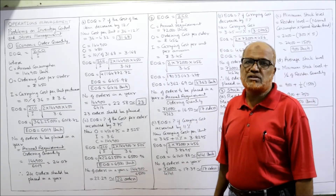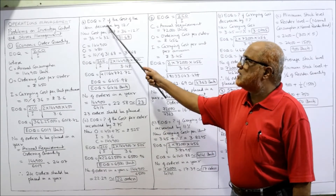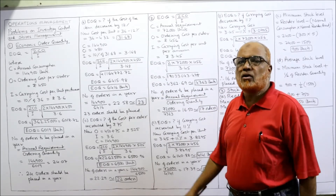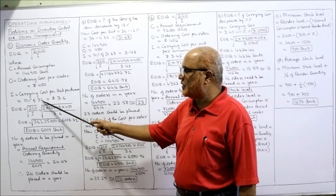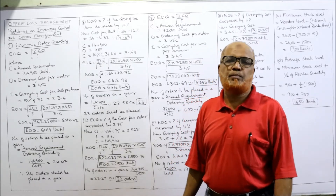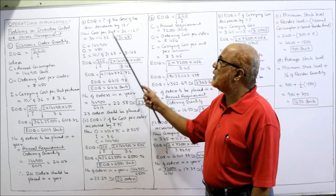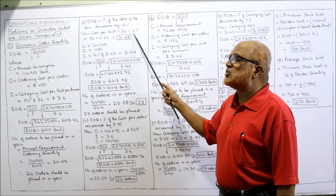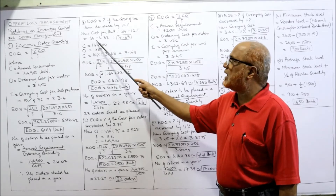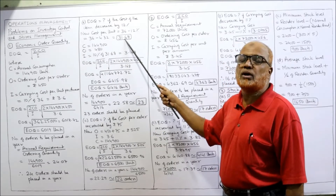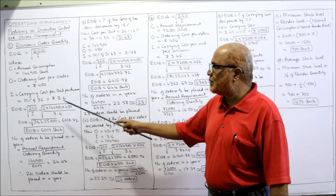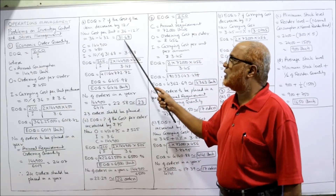The second part of this problem: what is the EOQ if the cost of the item decreases by 12%? Previously the cost per unit was Rs. 36. Reducing by 12%: 12% of 36 = 4.32, so 36 − 4.32 = Rs. 31.68. This is the new cost per unit.